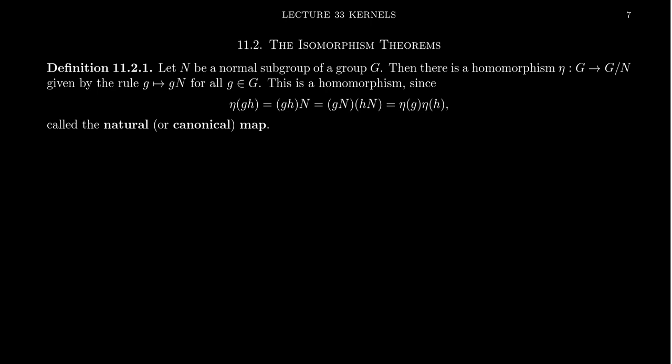Let N be a normal subgroup of G. Since N is normal, it makes sense to talk about the quotient group G mod N. That will be well defined. We're going to construct a homomorphism from G to a quotient group. In the literature, this is commonly referred to as eta, the Greek letter eta. We don't know anything about the group G except that it has a normal subgroup, and because it has a normal subgroup, we can form a factor group.